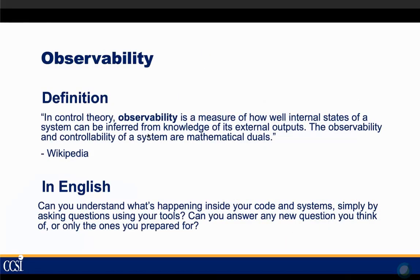So what is observability? From Wikipedia, in control theory, observability is a measure of how well internal states of a system can be inferred from knowledge of its external outputs. The more observable it is, the more controllable it is. In plain English: can you understand what's happening inside your code and systems simply by asking questions using your tools? Can you answer any new question you think of, or are you only locked into answering questions you're prepared for? That's really the difference between observability and monitoring — monitoring answers questions you're prepared for, while observability allows you to ask new questions and find answers.